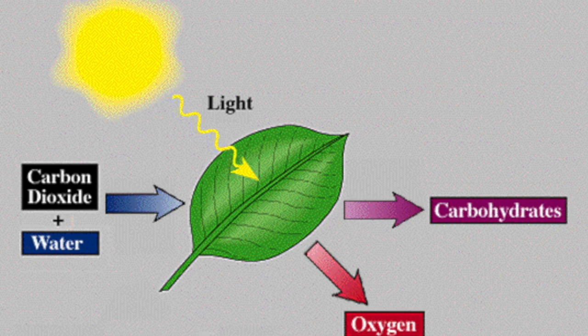Let's begin with photosynthesis. Photosynthesis is the chemical process in which plants use sunlight to produce their own food from water and carbon dioxide. It begins when the plant absorbs carbon dioxide from the atmosphere through their stomata. By taking in water and carbon dioxide, our plant now has the tools it needs to make photosynthesis happen.